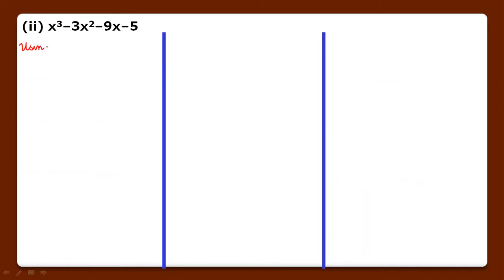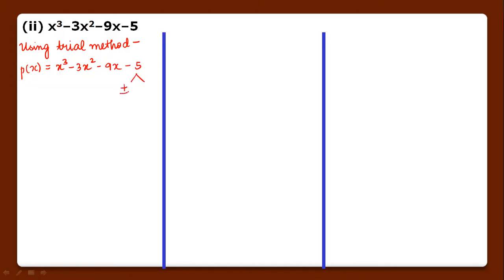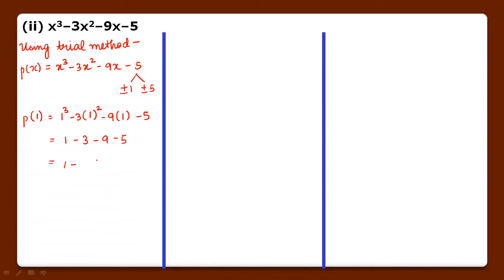Using the trial method again, P(x) = x cube minus 3x square minus 9x minus 5. The factors of the constant term 5 are plus minus 1 and plus minus 5. We try P(1) first: 1 cube minus 3 into 1 square minus 9 minus 5 = 1 minus 3 minus 9 minus 5. Adding the negatives: 9 plus 5 = 14, plus 3 = 17, so equals minus 16, which is not equal to 0. So this is not a factor.